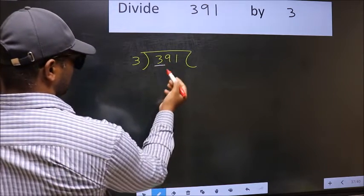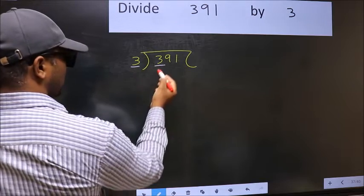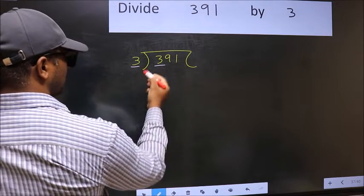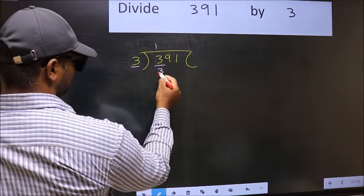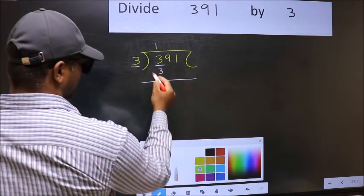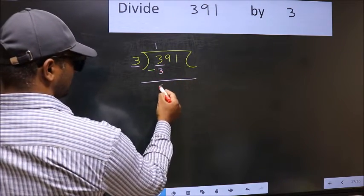Here we have 3. Here also 3. When do we get 3 in the 3 table? 3 once, 3. Now you should subtract. 3 minus 3, 0.